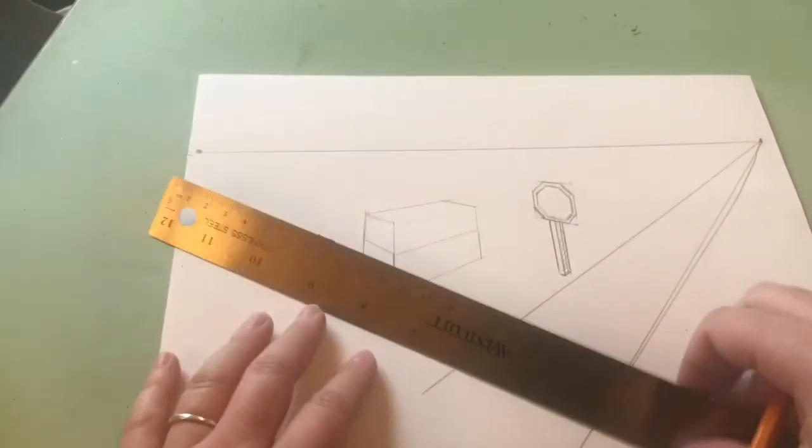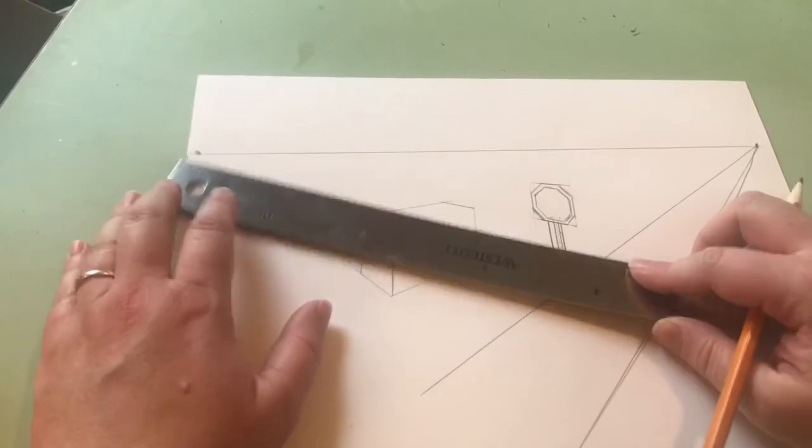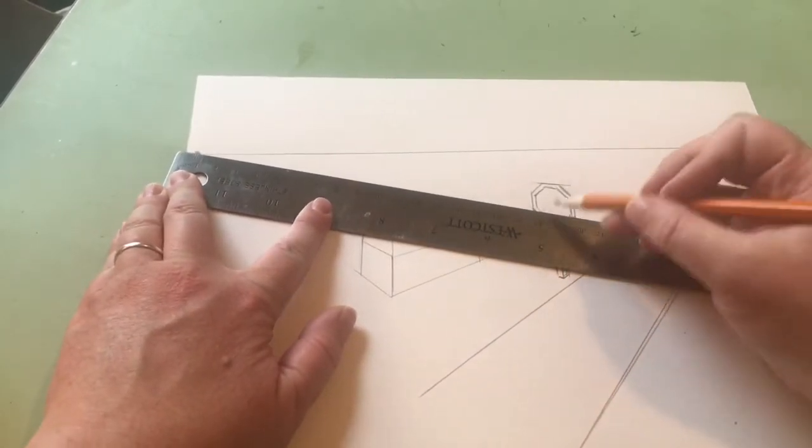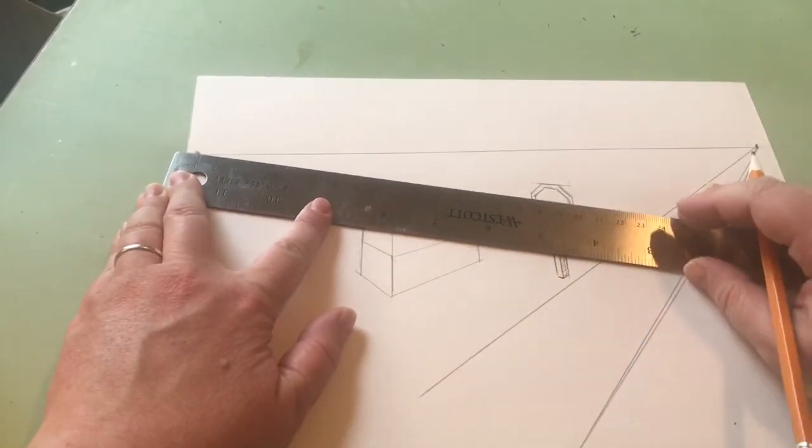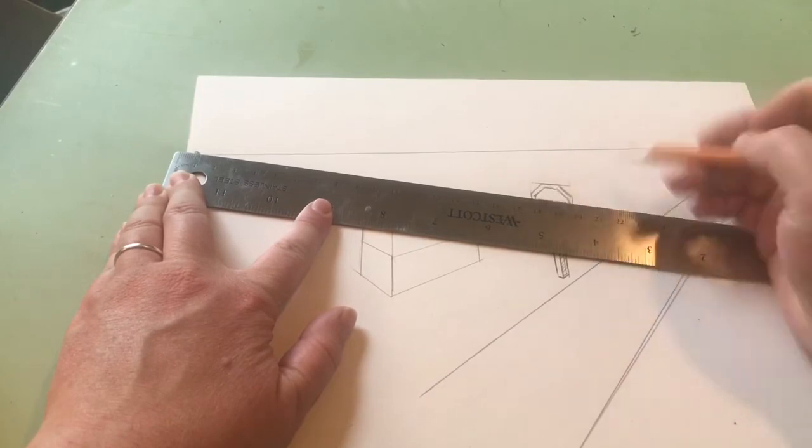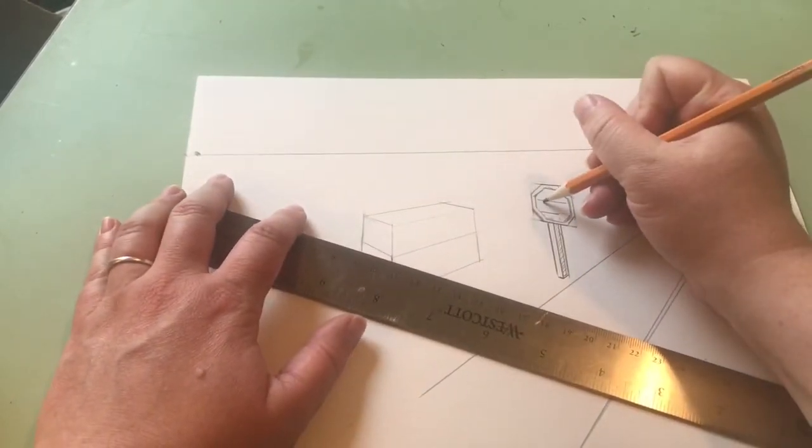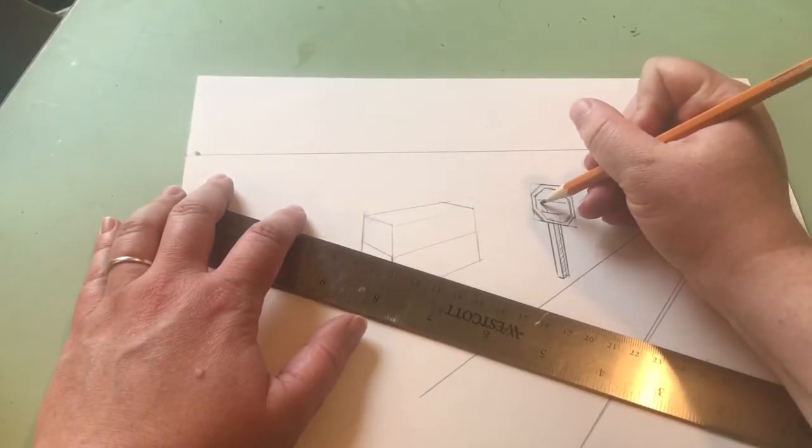If I want to put the letters in there, I would use my left vanishing point to kind of give myself a guide. My letters would go along that guide.